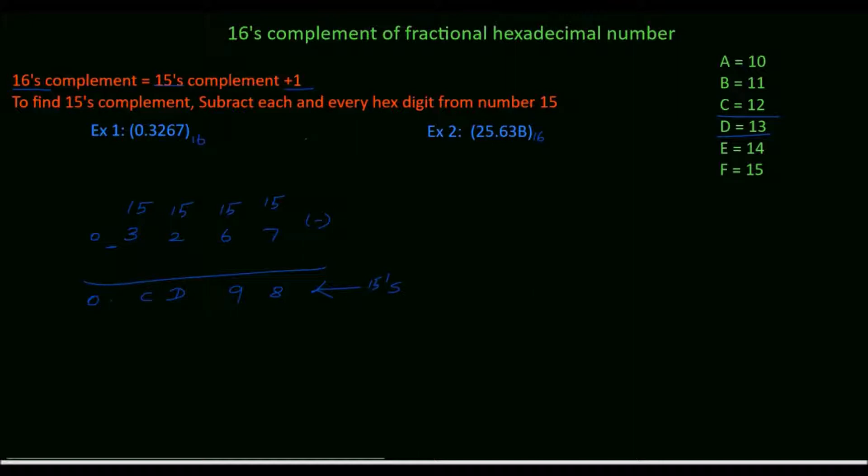Now, we have to find 16's complement, so add 1 with the rightmost digit. 8 plus 1 is 9. Write remaining digits as it is. Point CD99 is the 16's complement of the given hexadecimal number.